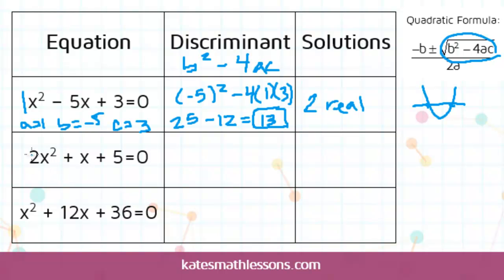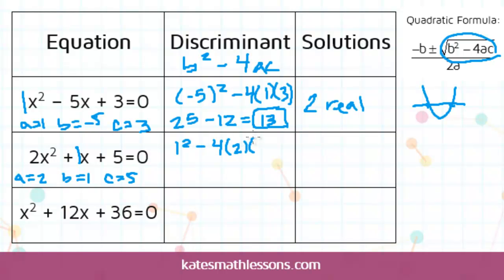Let's look at this next one. Our a value would be 2 — a is always the coefficient of the x-squared term. There's really a 1 here in front of the x, and the c value is 5. So plugging into the discriminant formula: b squared is 1 squared, minus 4 times 2 times 5. 1 squared is just 1; negative 4 times 2 times 5 is negative 40. So this is 1 minus 40, which equals negative 39.